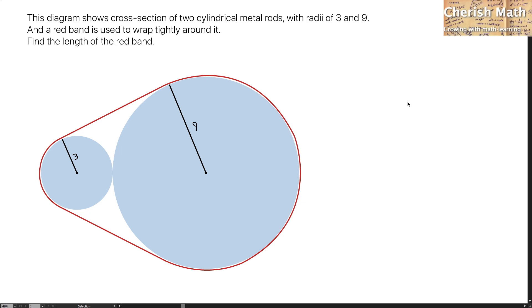Say hi from Cherish Math. This is the question. This diagram shows cross-section of two cylindrical metal rods with radii of 3 and 9. And a red band is used to wrap tightly around it. Find the length of the red band.